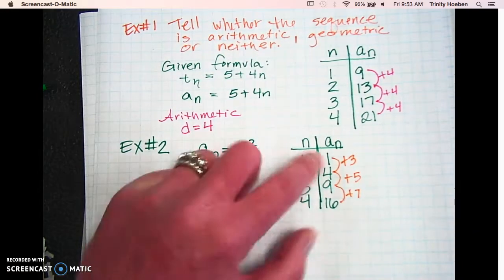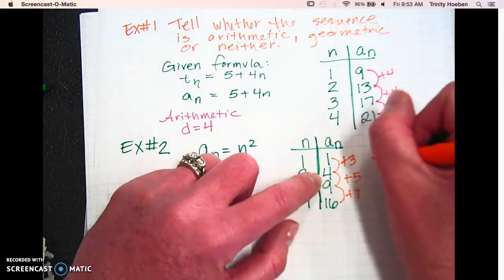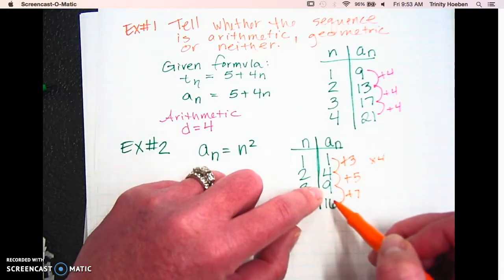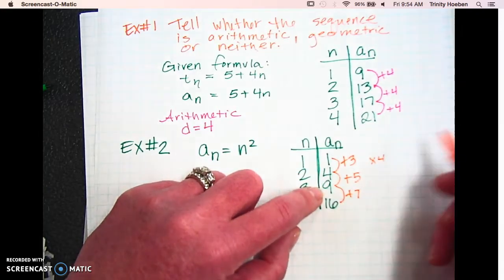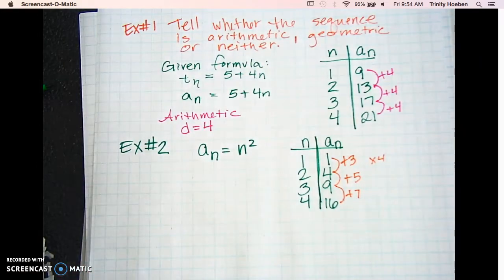How about multiplying? Is there a way we can multiply to get from 1 to 4? Sure, you could say times 4. But how about from 4 to 9? 2.2 something. Okay, so is it arithmetic, geometric, or neither? Neither. Right?